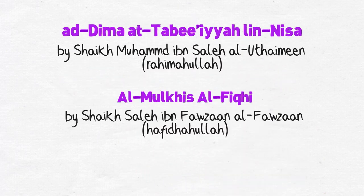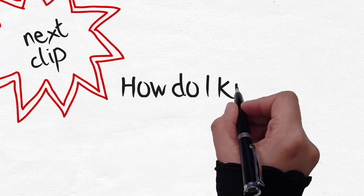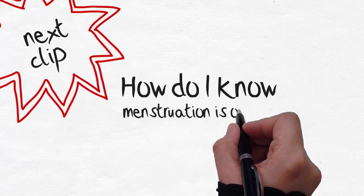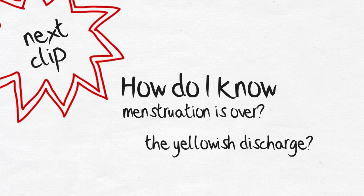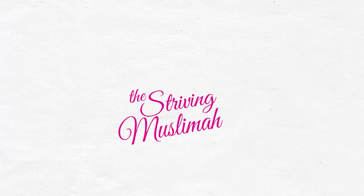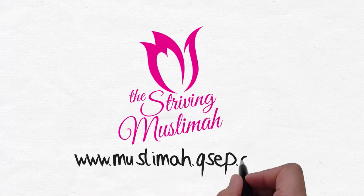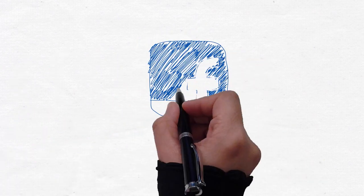So those are the do's and don'ts of menstruation. In the next clip, how can you make sure your menstruation is over and what about the yellowish discharge? See you in the next clip. Stay connected to the Striving Muslimah blog, where we nurture our Islamic identity and build confidence.